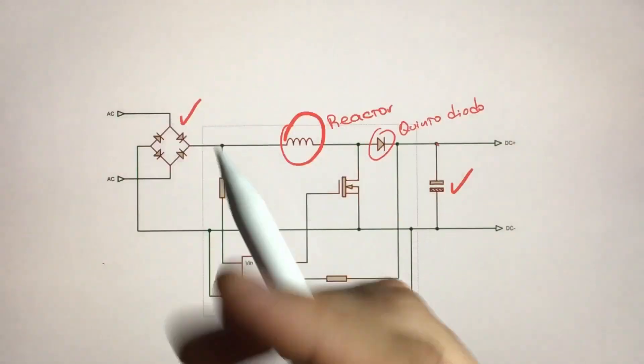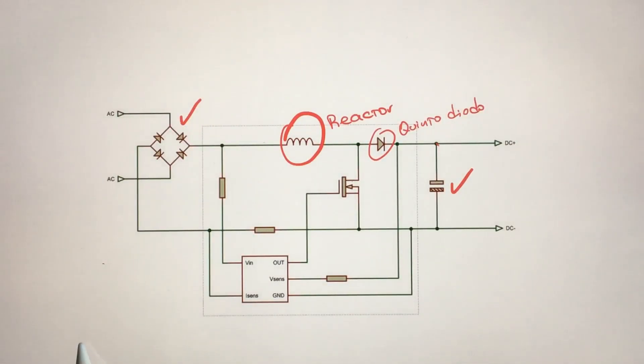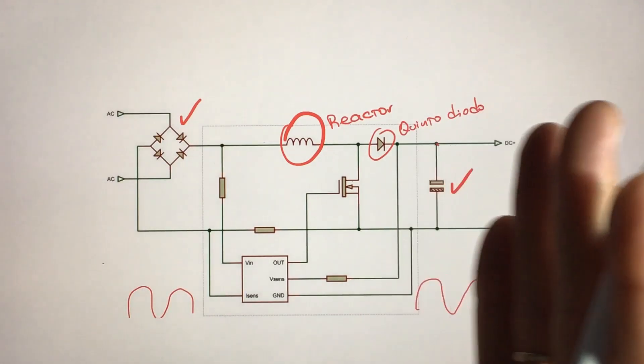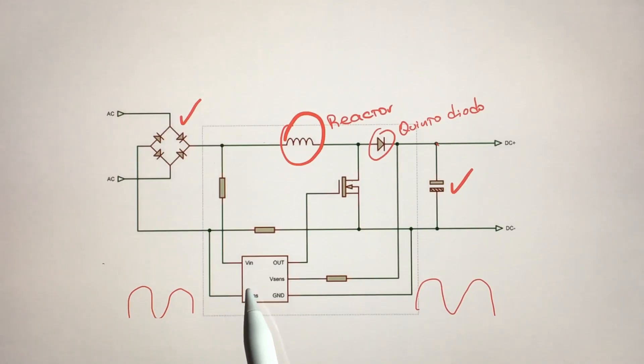You will have this division of the fifth diode so that what happens on this side, the voltage or wave that is on this side, be different from this side, and a computerized circuit that is here.